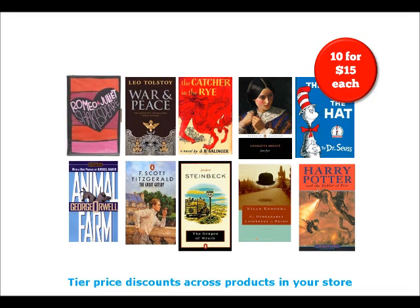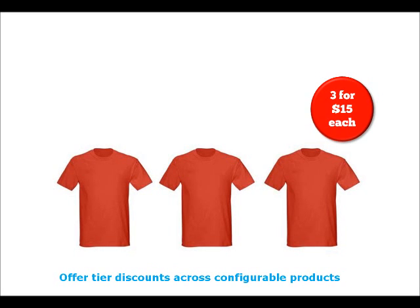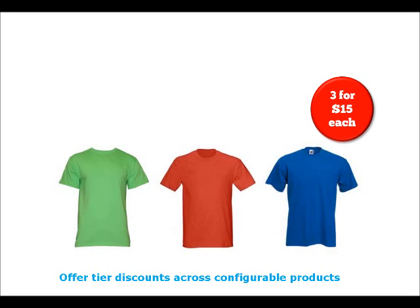Products are grouped together into discount groups. Configurable products work too — like these t-shirts. With standard Magento, you'd have to buy three red t-shirts to get a discount. With tiered pricing across multiple products, you can buy three of any colour and get that discount.